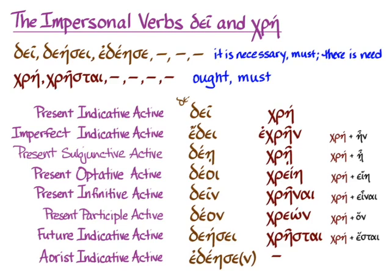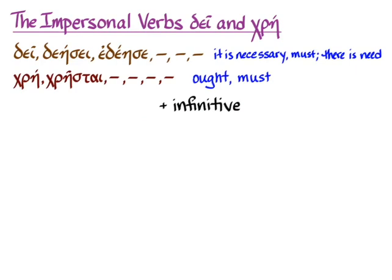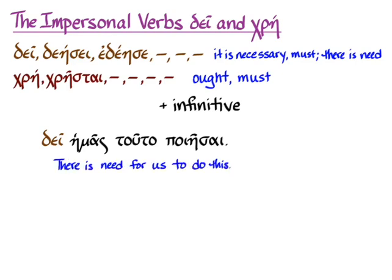So what do we do with these two verbs? We're going to use them with infinitives. For example: δεῖ ἡμᾶς ταῦτα ποιῆσαι. There we have δεῖ — 'it is necessary' — and then ἡμᾶς as the subject of the infinitive in the accusative, which is the normal thing, and then the infinitive with a direct object. That ends up meaning 'it is necessary' or 'there is need for us to do this,' or in more colloquial English, 'we must do this.'